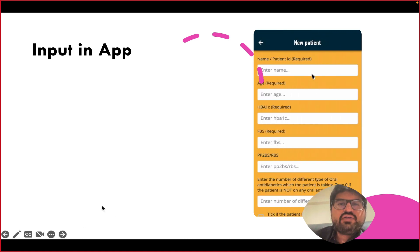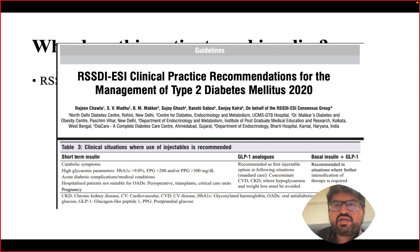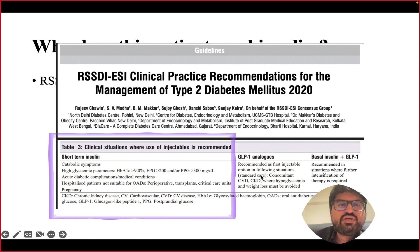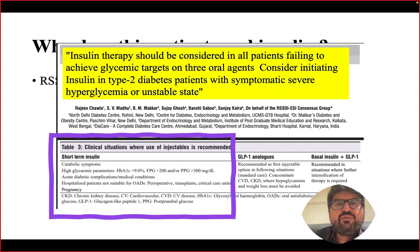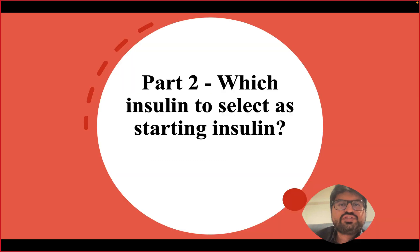Per the RSSDI and ESI 2020 guidelines, insulin is indicated when HbA1c is more than 9%, fasting more than 200, or post-meal more than 300. Beyond that, insulin therapy should be considered in patients failing to achieve glycemic target on three or more oral antidiabetic agents. This patient was on four oral antidiabetics with uncontrolled blood sugar — a clear indication for insulin.